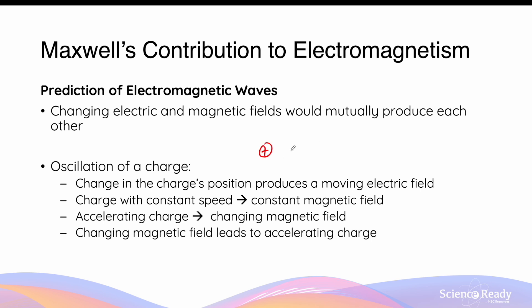When a charge oscillates, in other words moving back and forth, its changing position will produce a moving electric field, as we discussed. And this moving charge will also produce a magnetic field. If the charge is moving with constant velocity or speed, this will produce a constant magnetic field.